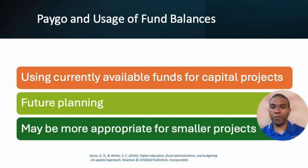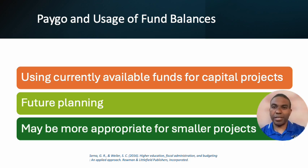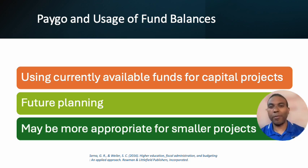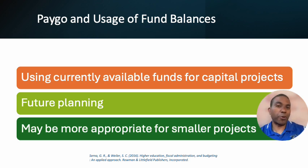For pay-as-you-go, using your fund balances, you can use your available funds to finance capital projects. Remember, capital projects are things that typically take multiple years to build out. This approach requires future planning — you have to plan ahead to have the money. And typically, because you won't have huge amounts of money available, this usually only works for smaller projects.